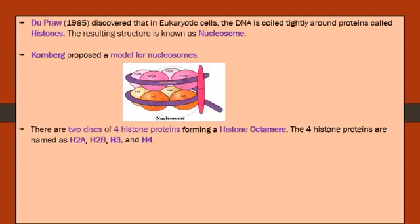There are two discs of four histone proteins forming a histone octamer. The four histone proteins are named H2A, H2B, H3, and H4. The first disc contains two H2A and two H2B, and the second disc contains two H3 and two H4, giving a total of eight proteins — the octamer.